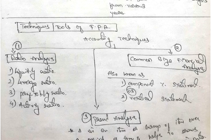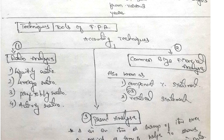Techniques, tools of financial performance analysis are accounting techniques. First, ratio analysis in which we calculate liquidity ratio, leverage ratio, profitability ratio, activity ratio. There are various ratios. This is an important topic from theory as well as practical point of view.